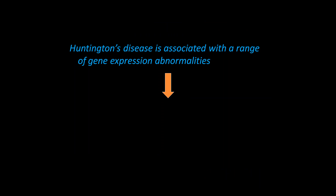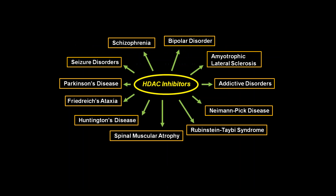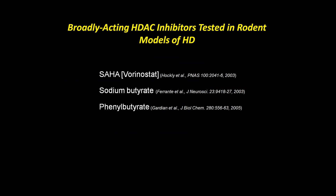Since Huntington's disease is associated with a wide range of gene expression abnormalities, this led to the idea that new drug targets could correct faulty transcription — and this is where HDAC inhibitors come in. HDAC inhibitors have been proposed for a wide range of neurological disorders beyond HD. They were initially developed as anti-tumor agents for cancer, with many clinical trials ongoing, but the reasons for their usefulness in cancer differ from why they may benefit neurological disorders. A major breakthrough was the identification of subtype-selective compounds.